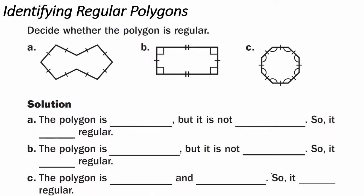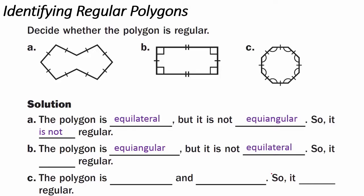Example three: identifying regular polygons — decide whether the polygon is regular. Figure A is equilateral, meaning all of the sides are equal, but it is not equiangular; we don't know that the angles are equal, so it is not a regular polygon. Figure B is equiangular — all angles are 90 degrees — but it is not equilateral because all the sides don't have the same measure, so it is not regular. Figure C is both equilateral and equiangular, so it is a regular polygon.